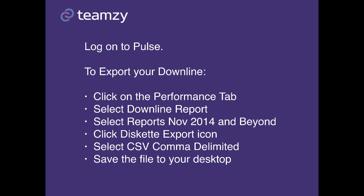To export your downline, we're going to click on the performance tab. Now select downline report. Select reports November 2014 and beyond and then click the diskette export icon.